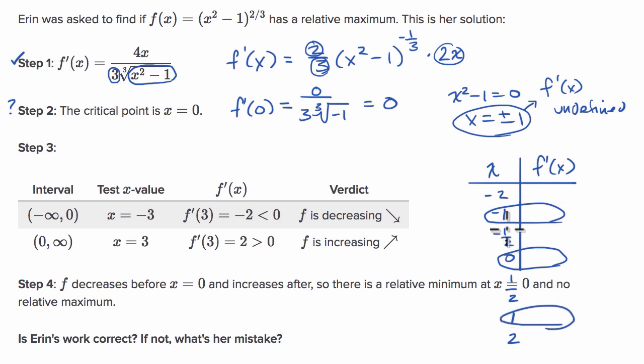And so you want to see in which of these situations you have a sign change of the derivative, and you just want to test in the intervals between the extremum points. So I would say that really the main mistake she made is at step two is not identifying all of the critical points.